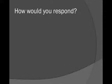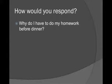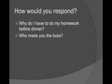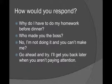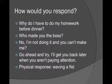We'll end with a journal exercise. How would you respond to the following? Number one: 'Why do I have to do my homework before dinner?' Number two: 'Who made you the boss?' Number three: 'No, I'm not doing it and you can't make me.' Number four: 'Go ahead and try — I'll get you back later when you aren't paying attention.' Number five: a physical response — the person waves their fist in your face. Take a few minutes to respond in your journal, and we'll conclude the module by covering how we might respond to each of these five types of defensive behavior.